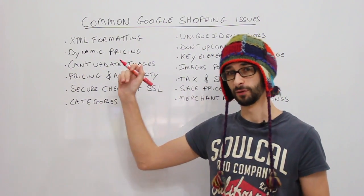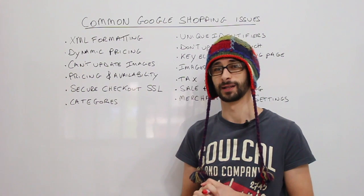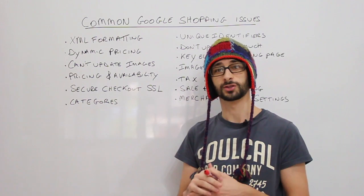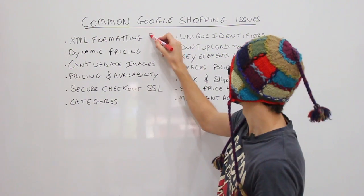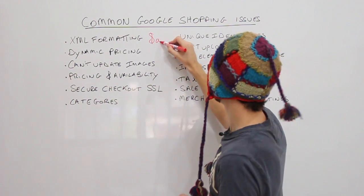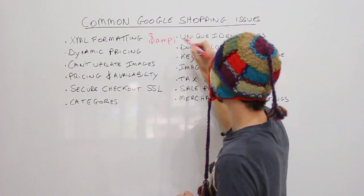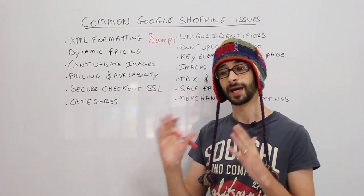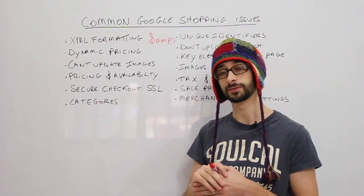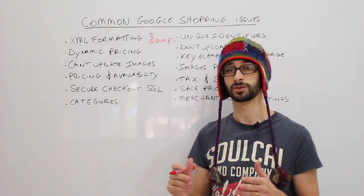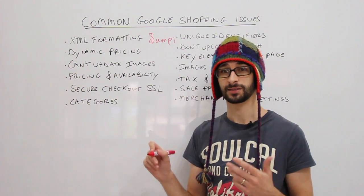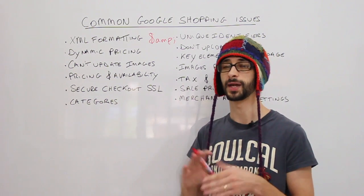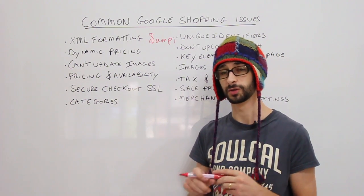The first issue is XML formatting if you are using XML as your data feed. You might not have escaped certain characters. For example, the ampersand character needs to be written as &amp; Also, special characters such as the cent sign and the dollar sign need to be escaped or removed from your data feed.